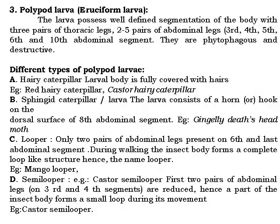The looper type larva has only two pairs of abdominal legs present on the sixth and last abdominal segments. During walking, the body forms a loop-like structure, hence the name looper. An example is the mango looper. The semilooper — for example the castor semilooper — has the first two pairs of abdominal legs on the third and fourth segments reduced, so it forms only a partial loop during movement.